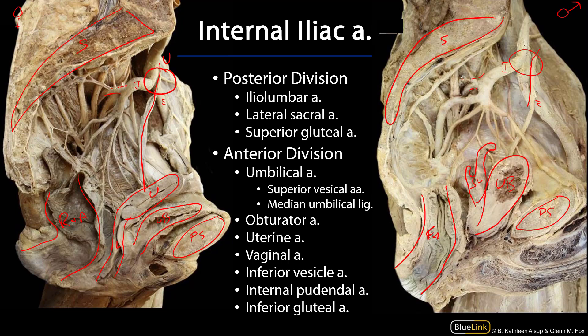The first branch is typically the iliolumbar artery, which in this case is coming off of the internal iliac before it splits into divisions, ascending up out of the pelvis. Then we have typically two lateral sacral arteries. These lateral sacral arteries travel through the sacral foramina to supply the wall of the pelvis posteriorly. The terminal branch is the superior gluteal artery, which supplies some of the muscles of the hip, exiting the pelvis superior to the piriformis muscle.